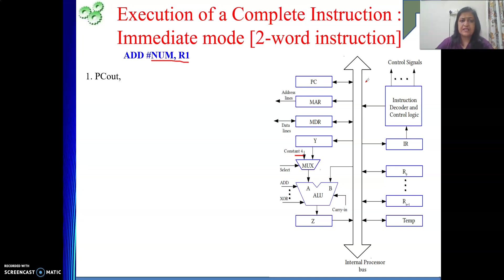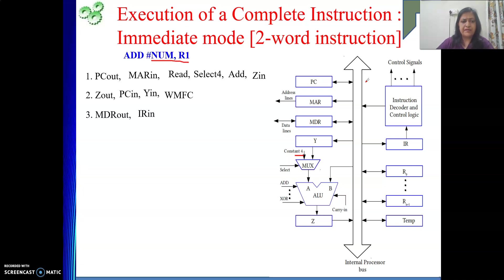So 'num' is in the next memory word. The first fetch gives us the opcode and addressing mode. Then: PC out, MAR in, read, select 4, add, Z in — this part is similar to the previous explanation, so not repeating. After the first fetch, we have the opcode. We then learn the address part is in the next word, so we need to get it. The address of that word is now in PC.